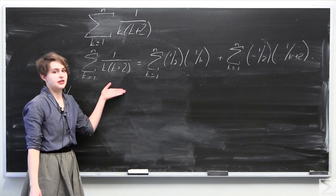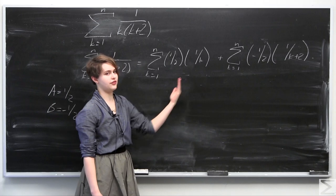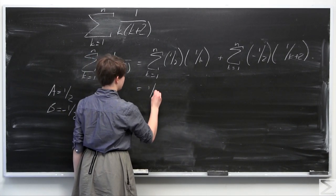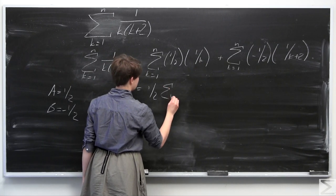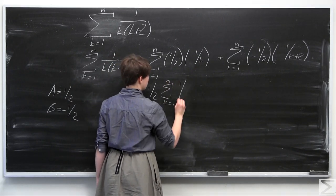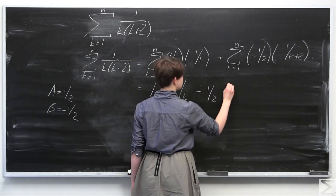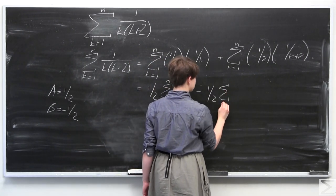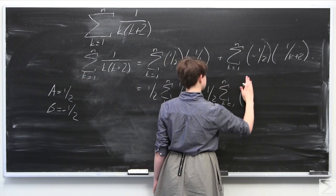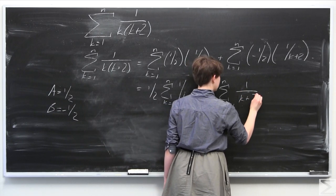Using the linearity of the summation, we bring the constants 1 half and negative 1 half outside their respective summations.